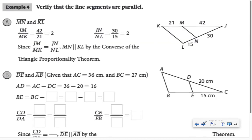Let's use those proportions to show that lines are parallel. In part A, they've done the example for you. They set up the ratio 42 over 21, they set up the ratio 30 over 15, they showed that they're equivalent. Therefore, MN is parallel to KL by the converse of the triangle proportionality theorem.